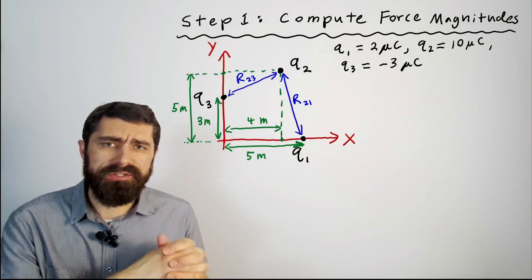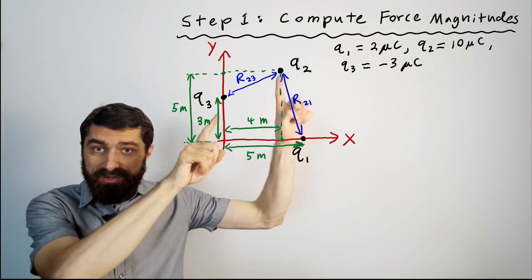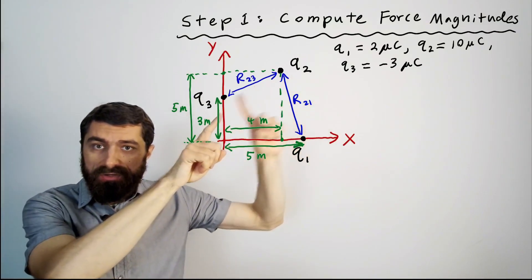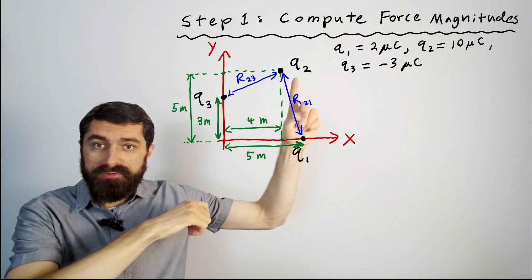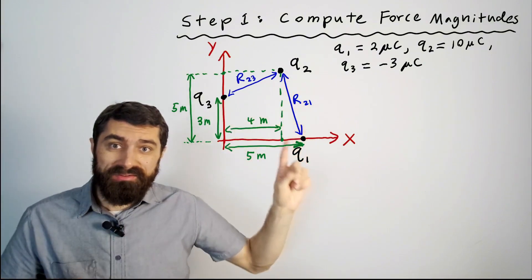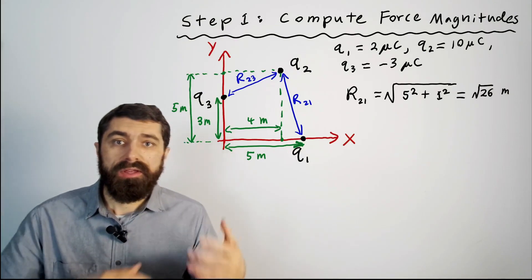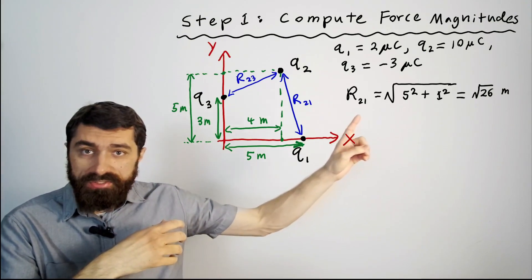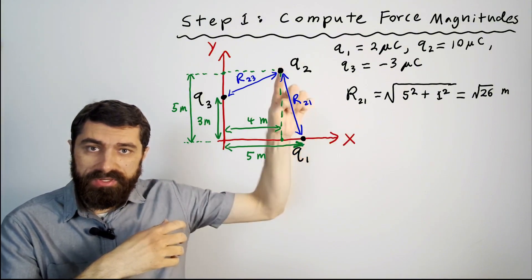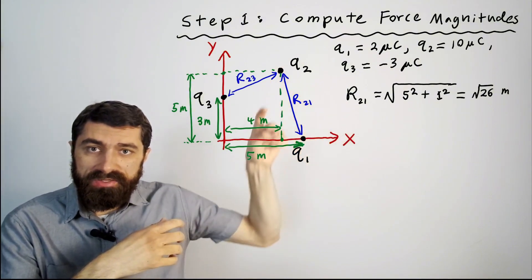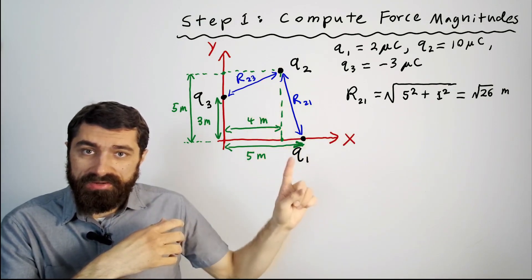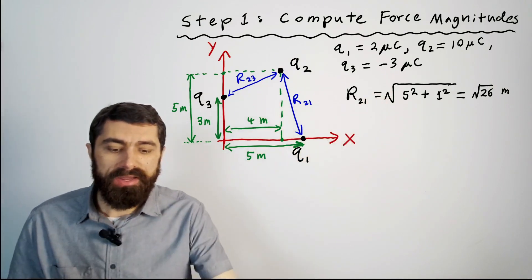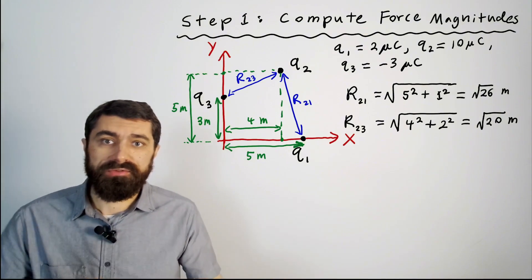So the first thing we want to do is calculate the distance between each of the point charges so we can figure out what is the force exerted on q2 due to q3 and what is the force on q2 due to q1. So we can go ahead and calculate that using geometry. r12 here, you can see we can just use the Pythagorean theorem. We've got a distance of five meters here and a distance of one meter right here. So you just take the square root of the sum of the squares and you do a very similar thing to find out what r23 is.